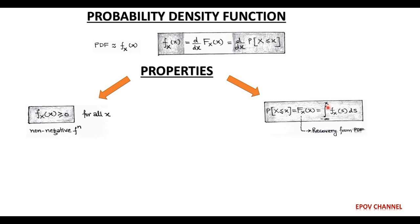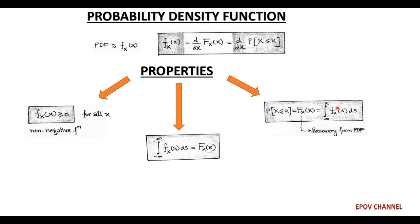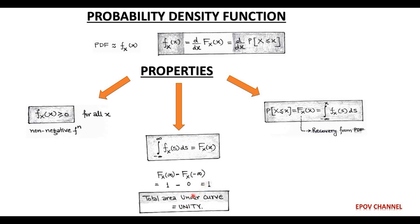The third property is that when we take the limit as real value x tends to infinity, the value of the integration is always equal to unity, representing that the total area under the curve is unity. When x tends to infinity the CDF equals 1, and when x equals minus infinity the CDF becomes 0. Accordingly, the value of the integration is unity — that is, unit area.